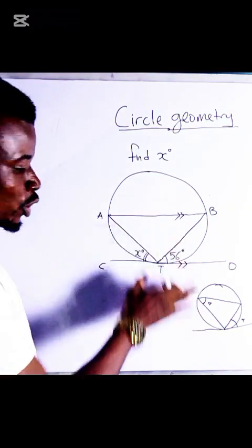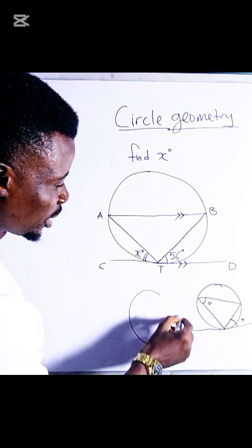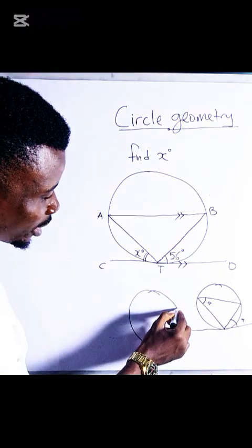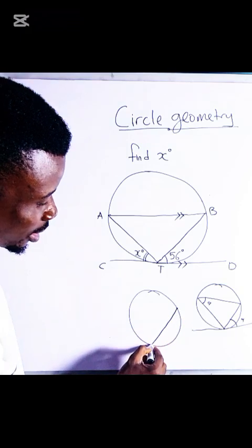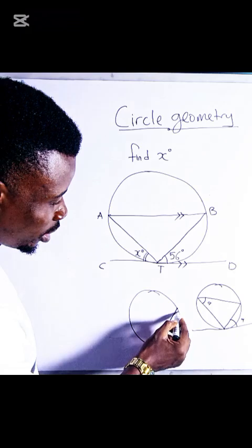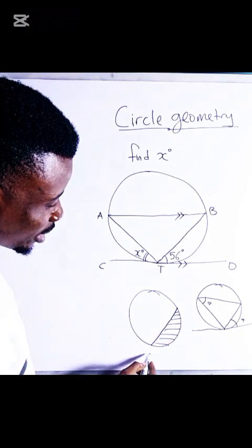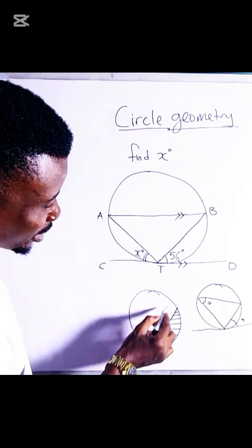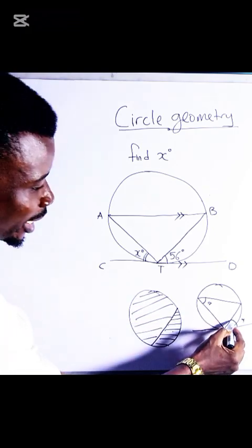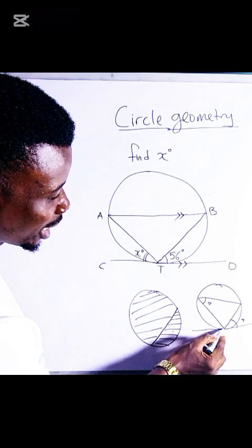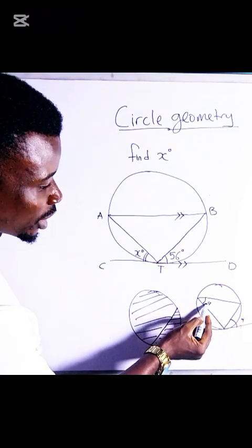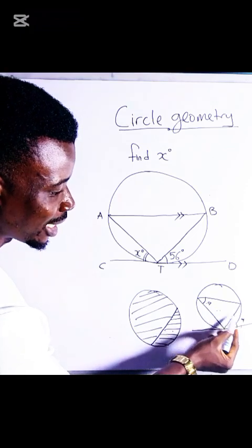Before then, what is a chord? A chord is a straight line that connects any two points in a circle, and its connection demarcates the circle into two segments - this is the minor segment and this is the major segment. So the angle made here is in one segment, the angle made here is in the major segment. The minor segment and the major segment are alternate segments.